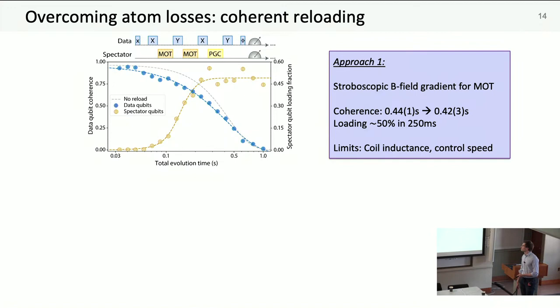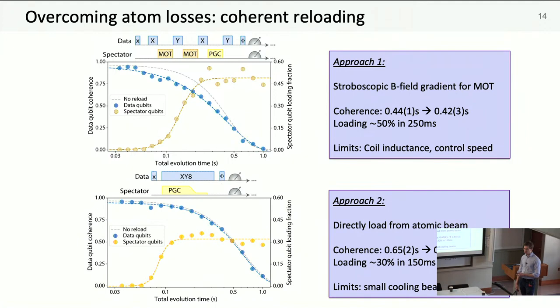Something else we realized we can do that's really neat is, because we have our 2D MOT, we can actually cool directly from our atom beam using PGC. In this case we don't have to worry at all about our magnetic field coils ringing up and down. We can just decouple the data qubits as we like. Sticking with 8 pulses, you see basically no change in the coherence. Just via optical molasses, we load faster than through our 3D MOT, albeit to a slightly lower fraction of about 30% of sites.